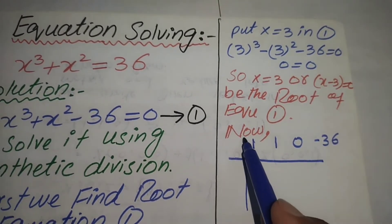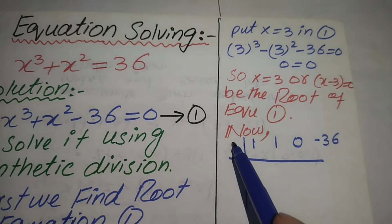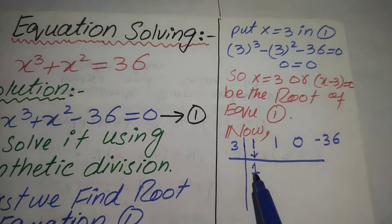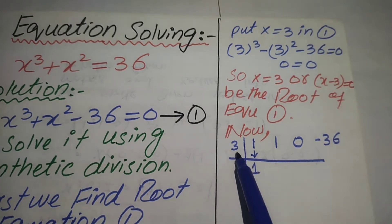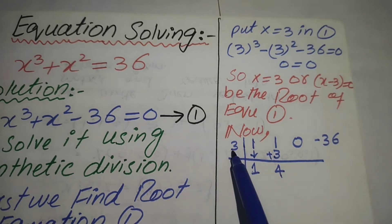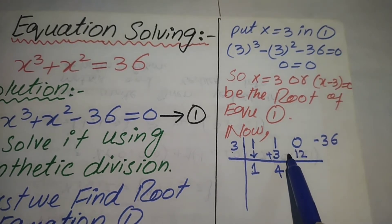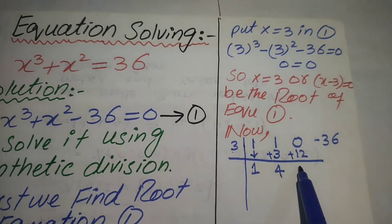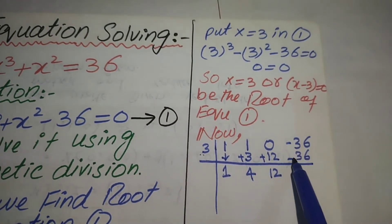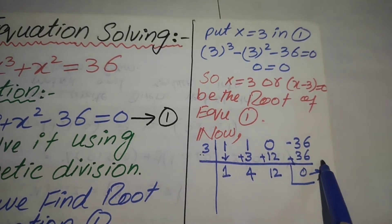We write the root, which is 3, and then bring down the first coefficient, 1. We multiply 1 by 3 to get 3, and add: 1 + 3 = 4. Then 4 × 3 = 12, and 0 + 12 = 12. Then 12 × 3 = 36, and −36 + 36 = 0. The last term is the remainder.